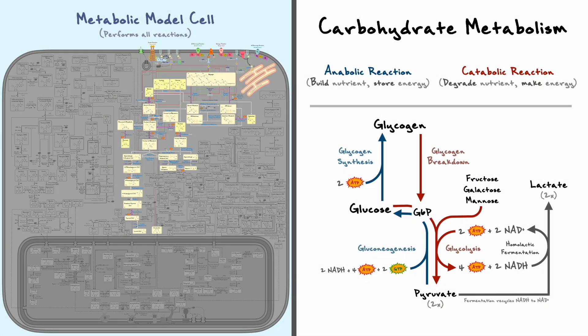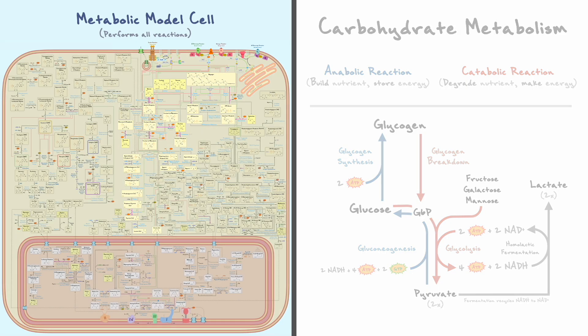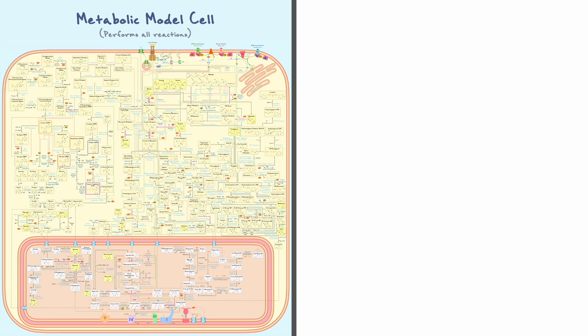Alright, with this section on carbohydrates now covered, I want to consider how energy is produced in a mitochondria. To do so, I want to briefly recap what we've covered in our metabolic map thus far, as the section we are about to begin picks up right where we left.